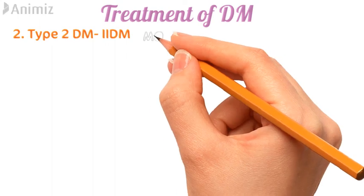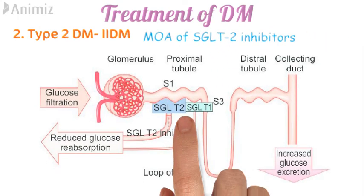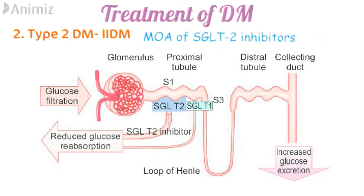Finally, the mechanism of action of SGLT2 inhibitors: glucose is filtered through the glomerulus and reaches the proximal convoluted tubule (PCT), where around 70% of glucose is reabsorbed into the blood via the SGLT2 transporter, which is a sodium-glucose co-transporter. These drugs inhibit this transporter so that glucose is not reabsorbed and is instead excreted through urine. Drugs in this category include dapagliflozin, empagliflozin, canagliflozin, and ertugliflozin.